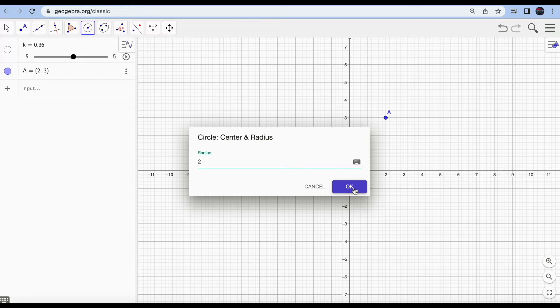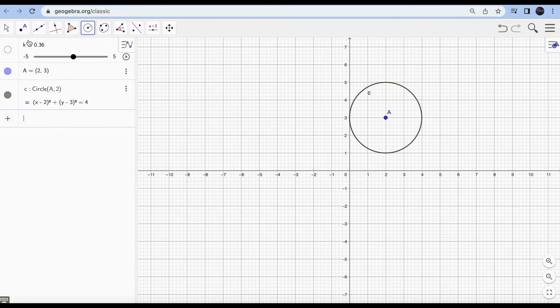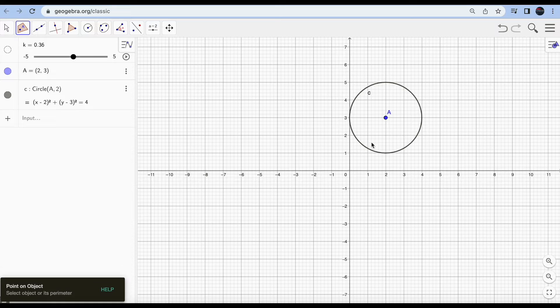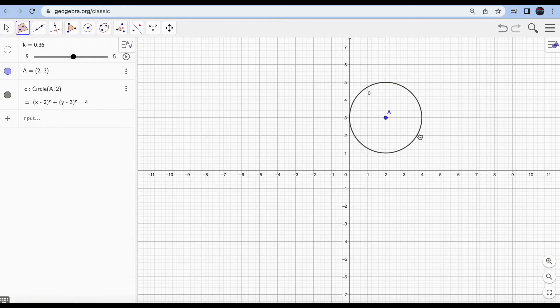When you go to point, just go to point on object and hit on the boundary of the circle, not inside, on the boundary of the circle circumference. Look, now point B is on one object which is a circle. If I play this button, it's already animated. You click it and it's going to start moving.